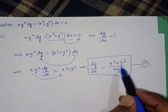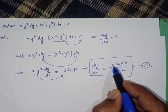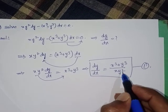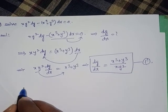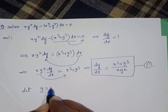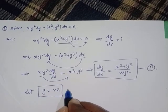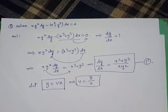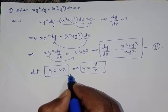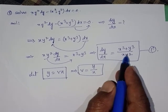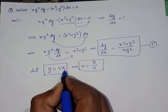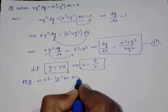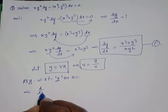Observing equation one, it is a combination of x and y variables. To solve this, we must use the substitution method. Let y = vx, from which v = y/x. We substitute y = vx for variable separable purposes, then differentiate with respect to x on both sides.